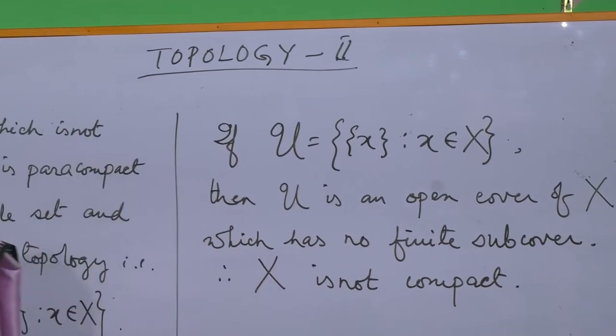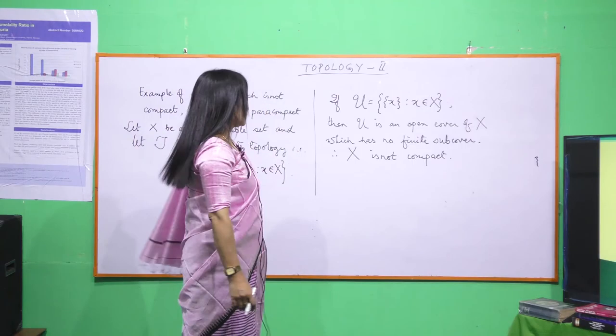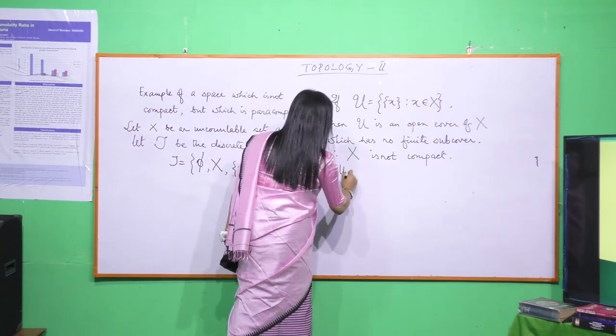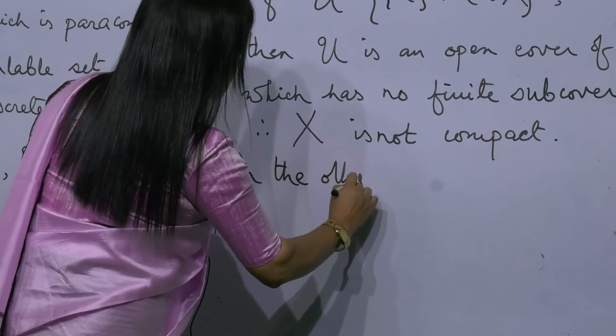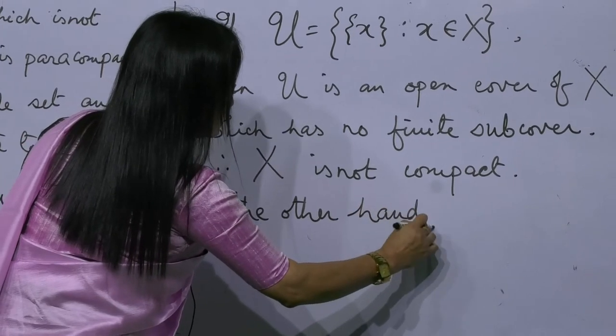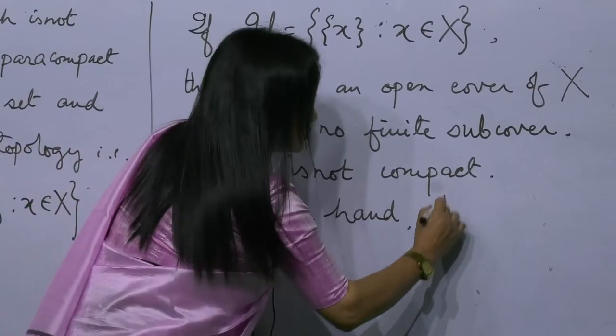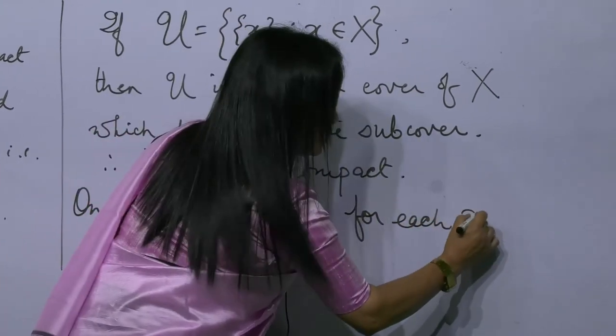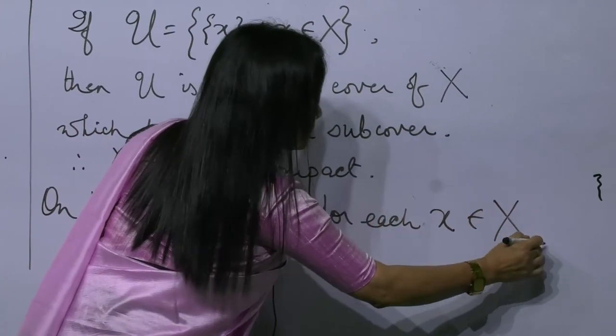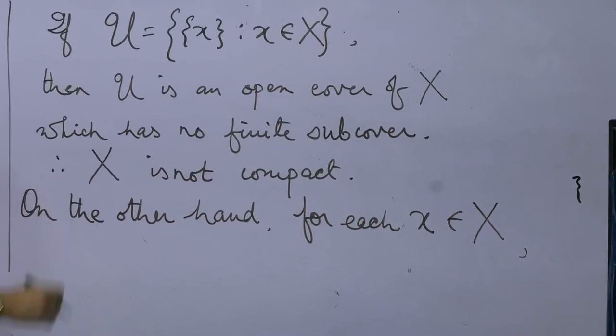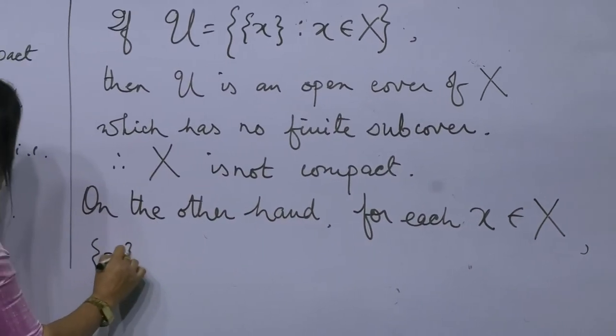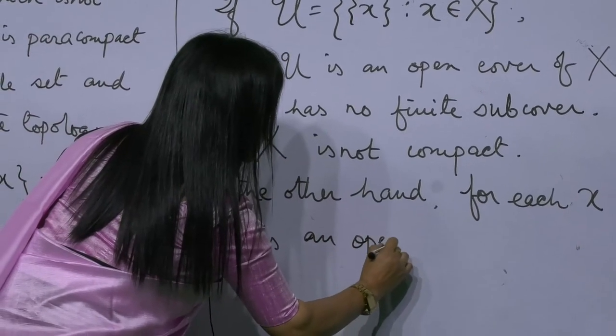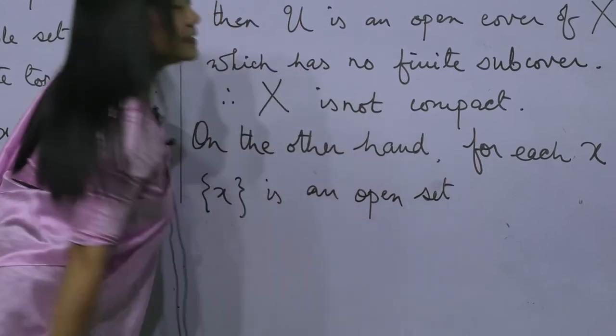This means that X is not compact. On the other hand, for its x belonging to the set X, the singleton set {x} is an open set.